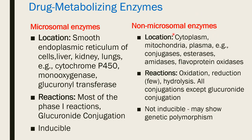Non-microsomal enzymes are located in the cytoplasm, mitochondria, and plasma. Examples are conjugases, esterases, amidases, flavoprotein oxidases. The reactions include oxidation, reduction, hydrolysis, and all conjugations except glucuronide conjugation, which occurs through microsomal enzymes. These non-microsomal enzymes are non-inducible and may show genetic polymorphism.